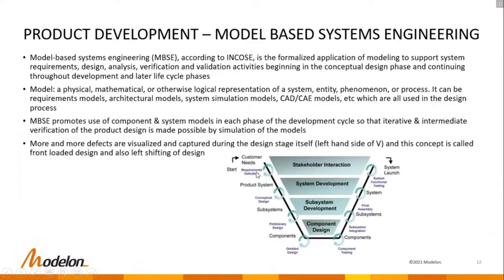MBSE promotes use of component and system models in each phase of the development cycle, so that iterative and intermediate verification of the product design is made possible by simulation. In the V-cycle, you see intermediate loops representing this iterative verification process. Using models at each phase — requirement models at the requirement stage, architecture models at the architectural stage, system models, and component models — allows you to identify failure modes as early as possible. This is called front-loaded design or left-shifting of design in the product development domain.